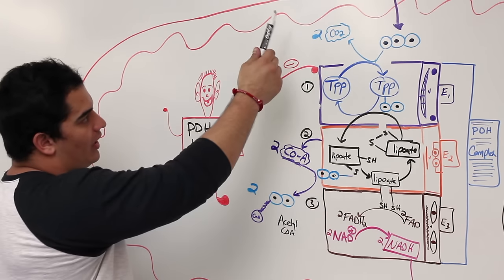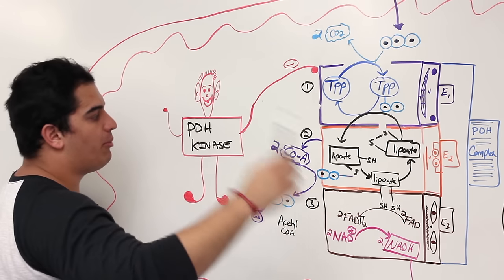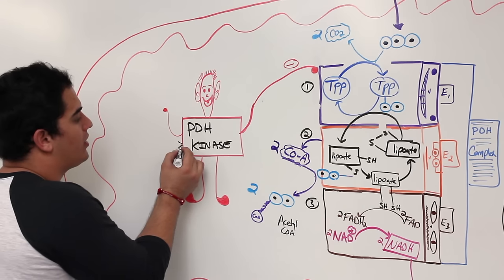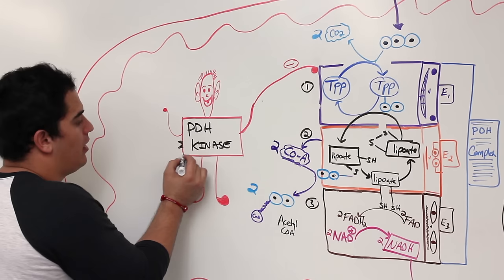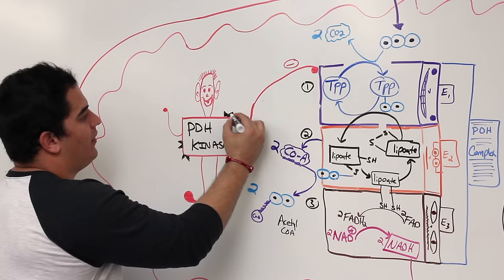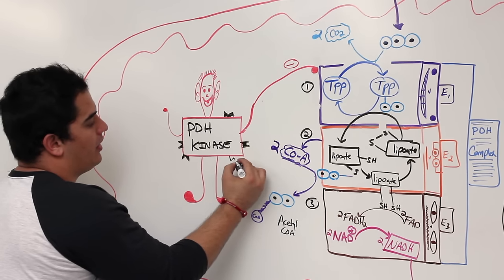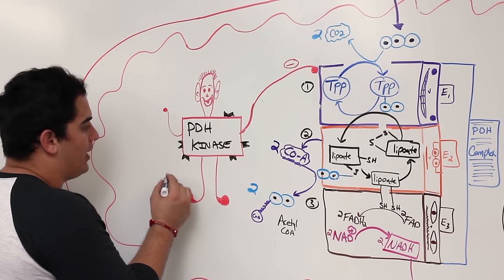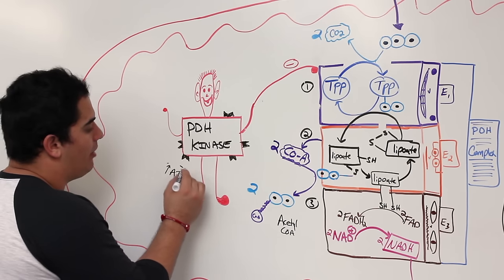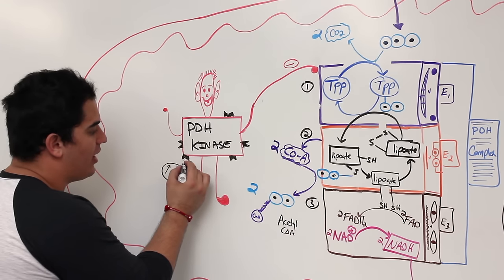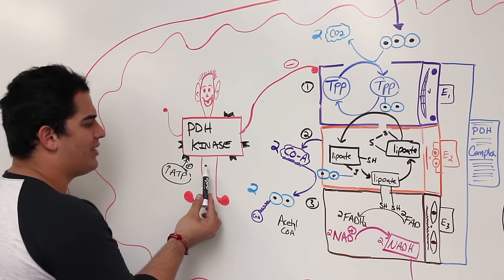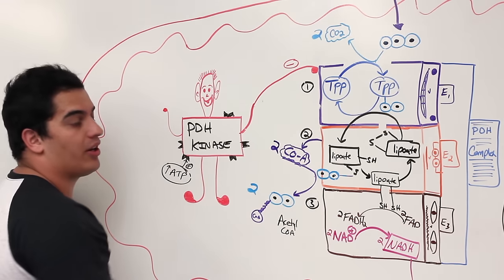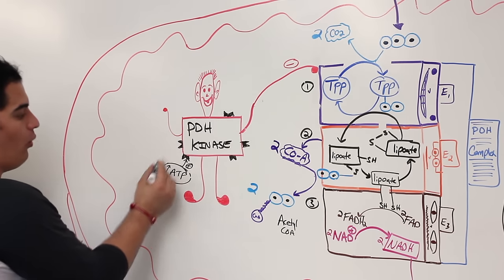PDH kinase has allosteric sites. High ATP — a strong indicator of too much energy production — binds to an allosteric site and stimulates PDH kinase. When PDH kinase is stimulated, it inhibits enzyme one, so no more ATP is made.